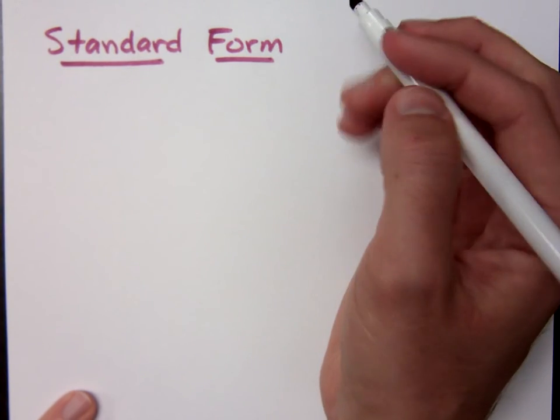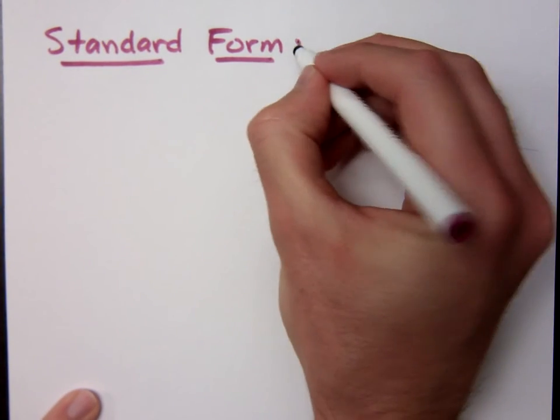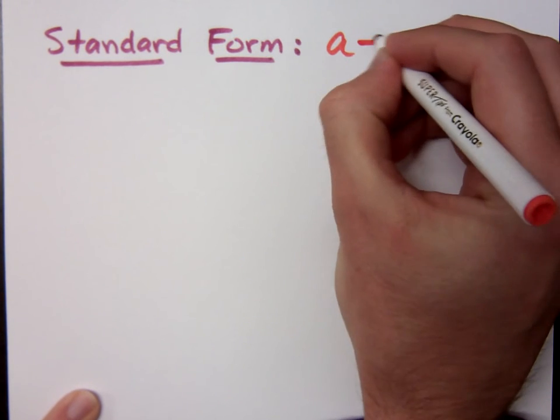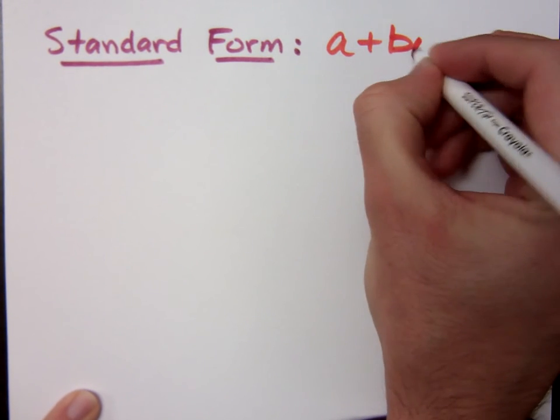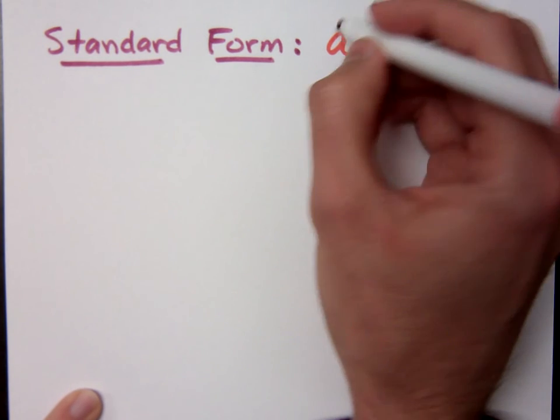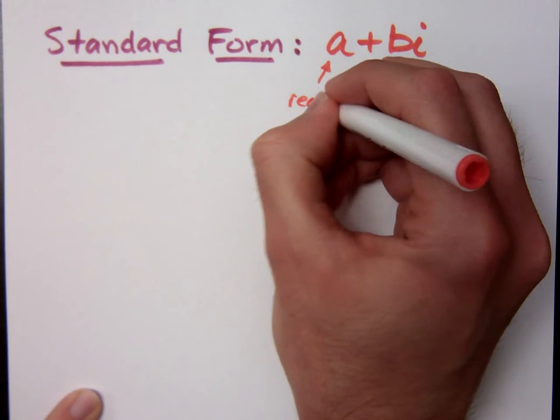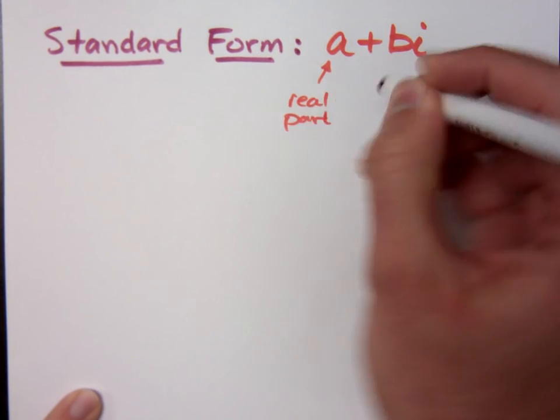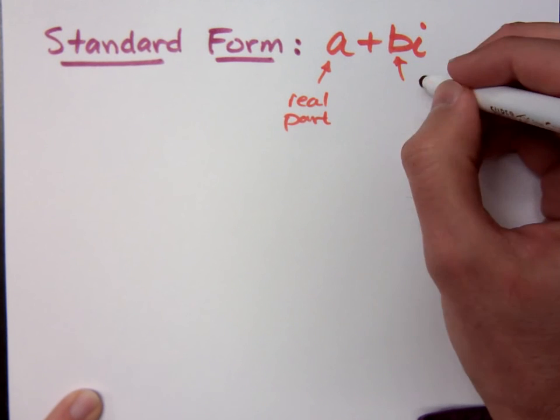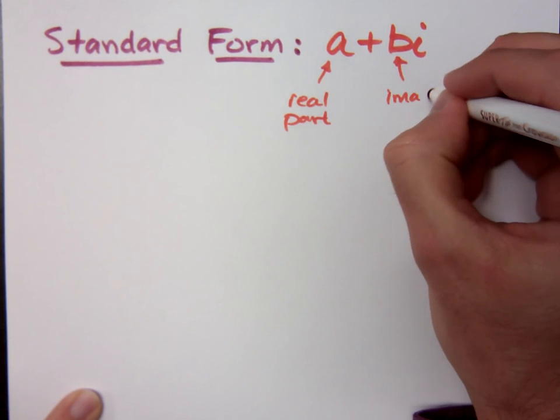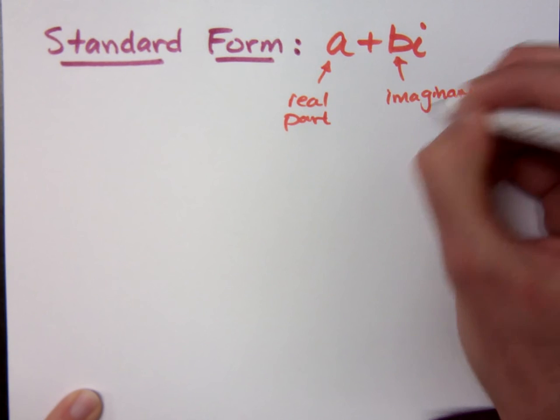Standard form for a complex number. Do you remember what that is? A plus B I. What you need to remember is that this guy is the real part, and the B, the coefficient of the I, is your imaginary part.